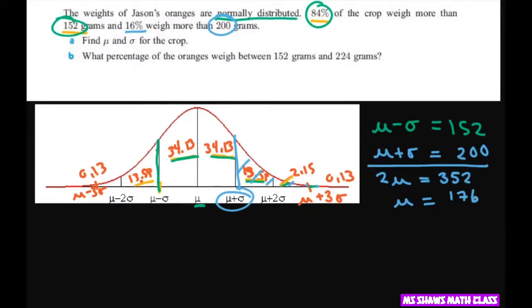So since we know this is 176, then all we have to do, we know that this amount is 200 and this one is 152. Then all I have to do is subtract 200 minus 176, which gives you 24. And that equals your standard deviation.